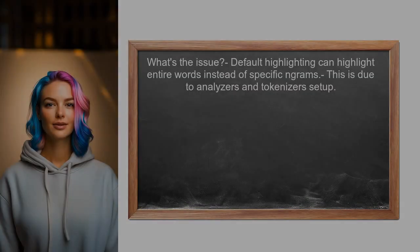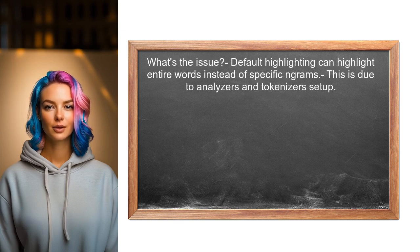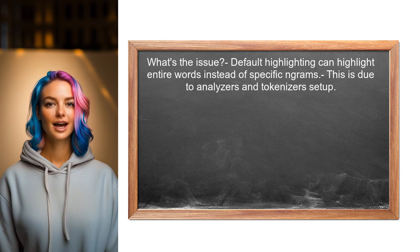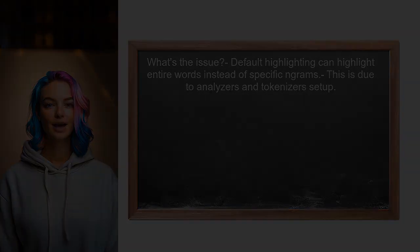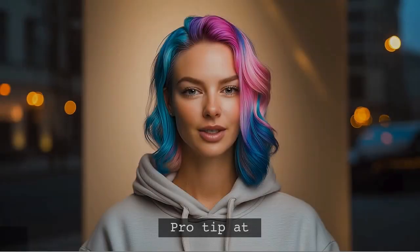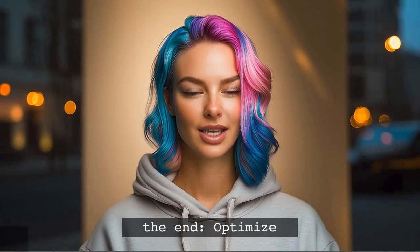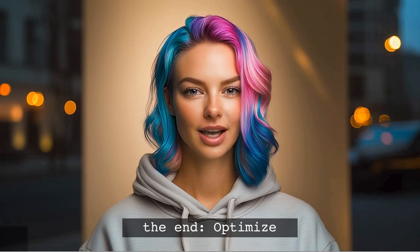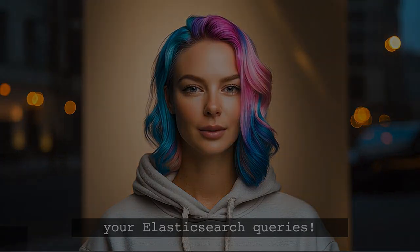So what's the issue here? When using Elasticsearch, the default highlighting behavior can sometimes highlight entire words instead of the specific NGrams. This happens due to the way analyzers and tokenizers are set up. Understanding this will help us find a solution. And stick around — at the end of this video, I'll share a pro tip that will help you optimize your Elasticsearch queries even further.